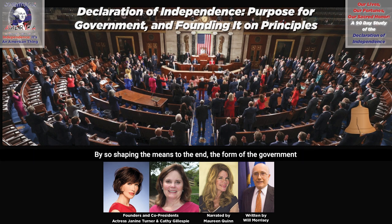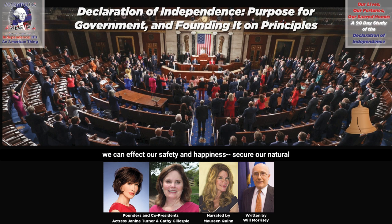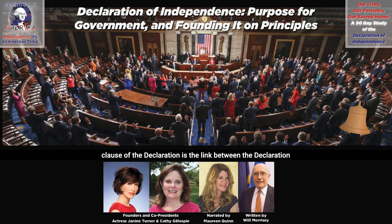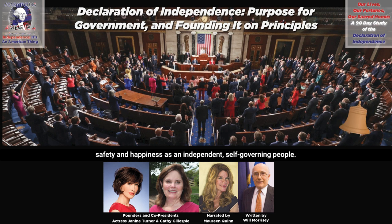By so shaping the means to the end — the form of the government — to the defense of natural rights, we can effect our safety and happiness, secure our natural rights in practice, not merely recognize them in theory. This clause of the Declaration is the link between the Declaration and the preamble to the United States Constitution. Justice, domestic tranquility, common defense, the general welfare, and securing the blessings of liberty are all elements of our safety and happiness as an independent self-governing people.